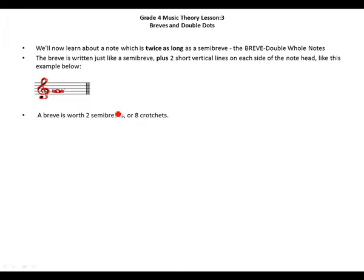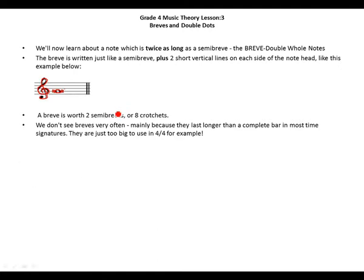A breve is worth two semibreves or eight crotchets. We don't see breves very often, mainly because they last longer than a complete bar in most time signatures. They are just too big to use in four-four time, for example.